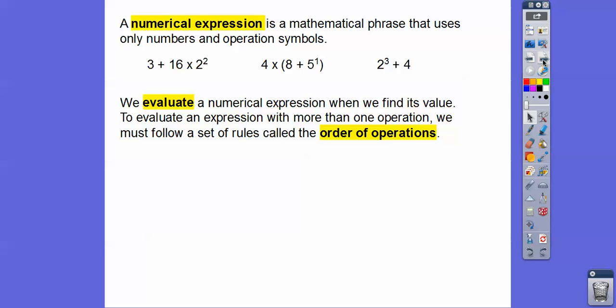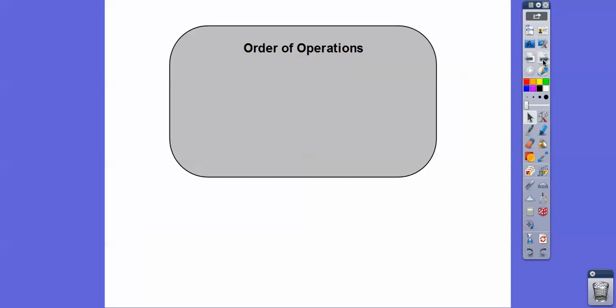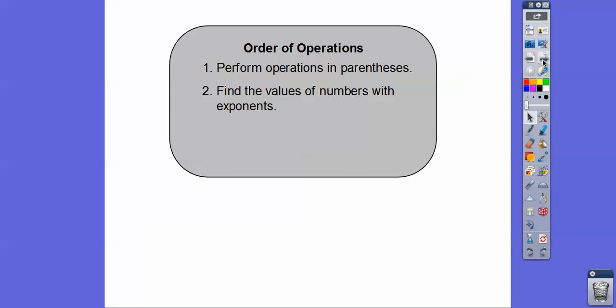To evaluate an expression with more than one operation, we have to follow a set rule called the order of operations, because otherwise you can get multiple answers. So here's how the order of operations goes: we perform the operations in parentheses first. If you see any parentheses, you do that stuff first. Then we find the values of the numbers with exponents — so parentheses first, then exponents second.